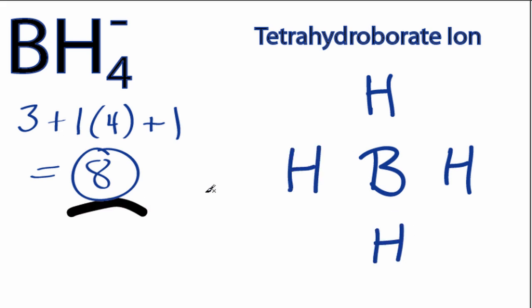We have a total of 8 valence electrons. We'll put 2 between atoms to form chemical bonds. We've used 6, and we've used all our valence electrons.